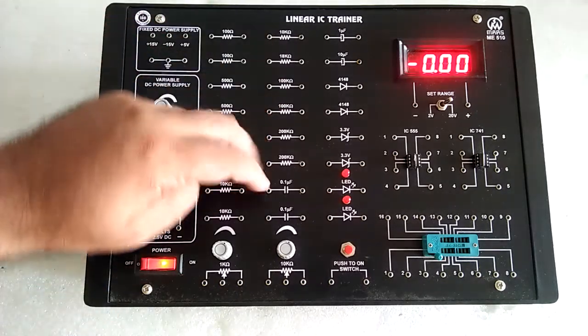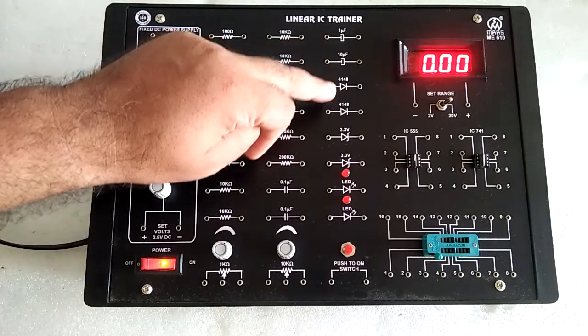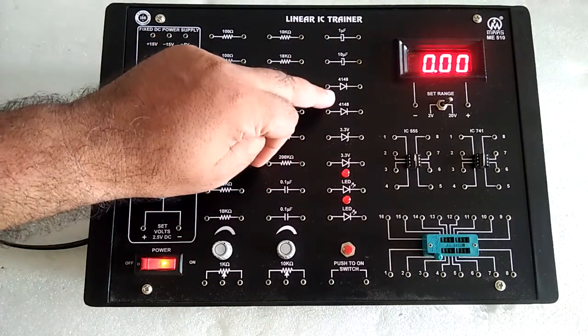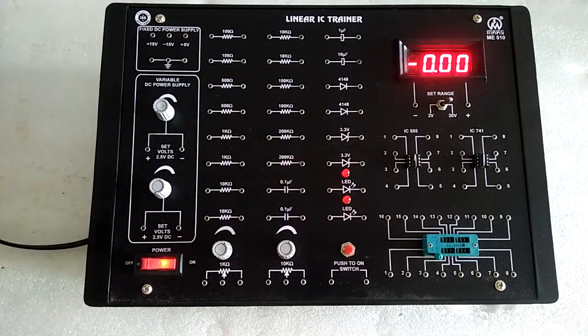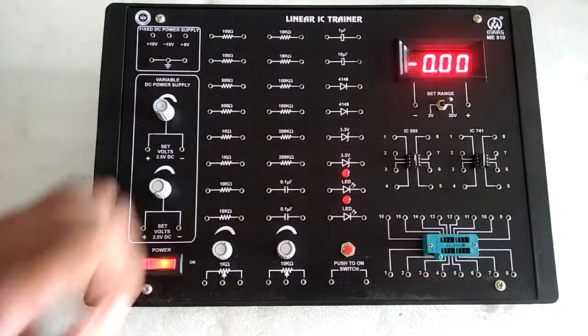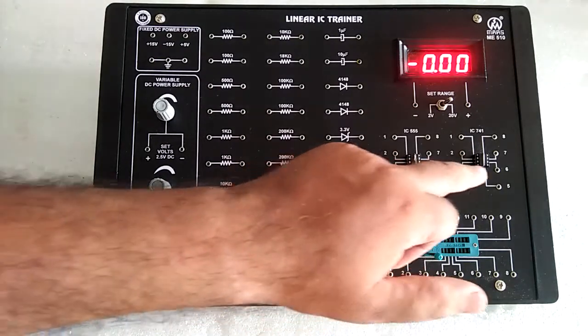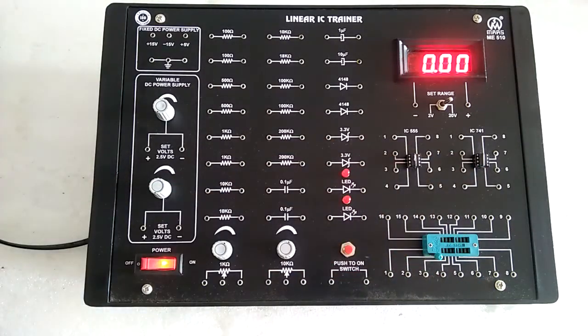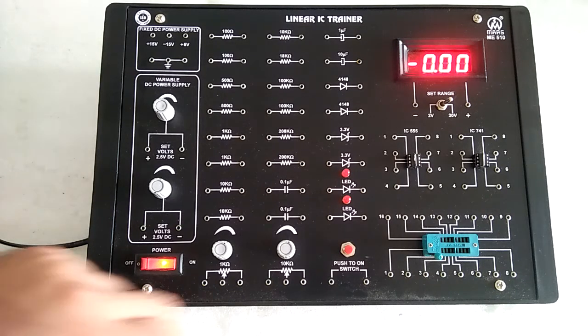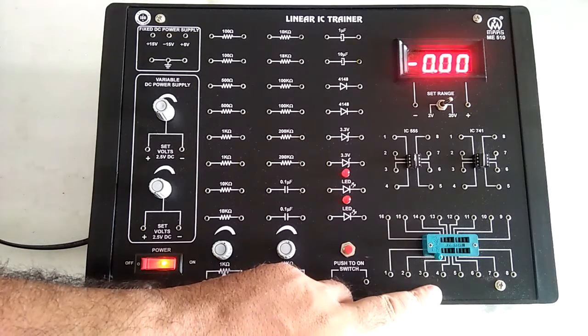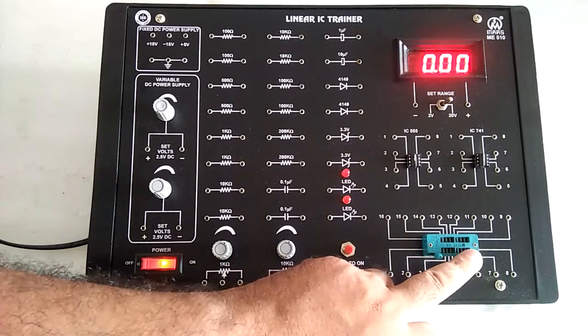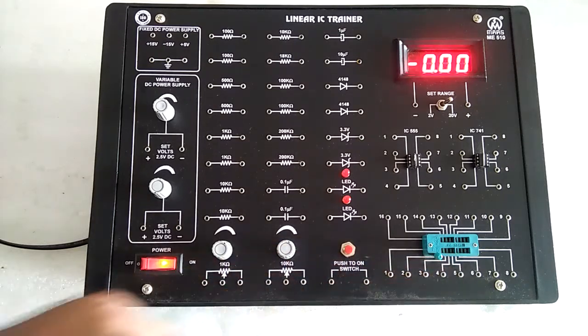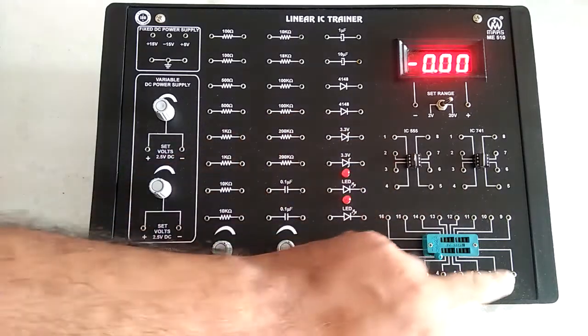We have the resistance bank, capacitance bank, diodes, Zener and LED present on the front panel. IC555 and IC741 are brought out with all pin sockets. Here we have a 16-pin ZIF socket where you can put any IC. All connections are brought out.